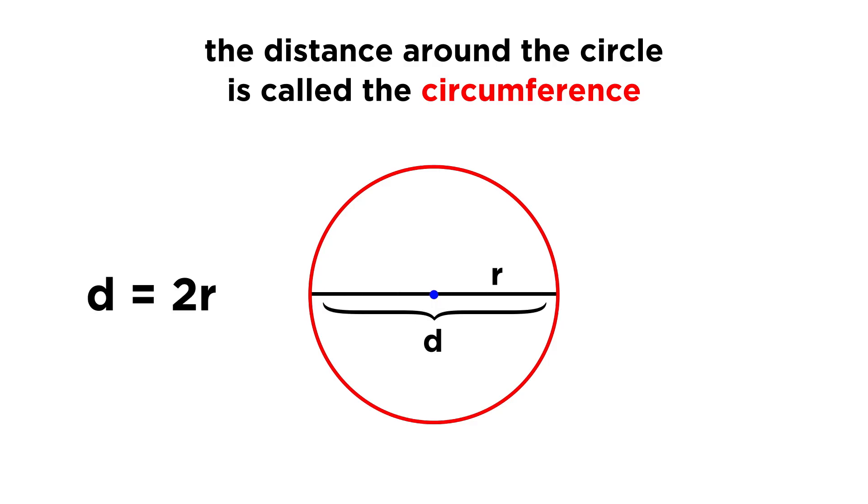Just the way that the diameter and radius are always in a two to one ratio, the circumference and the diameter also have a special ratio, and that ratio is represented by the number pi.